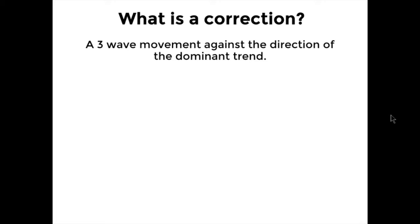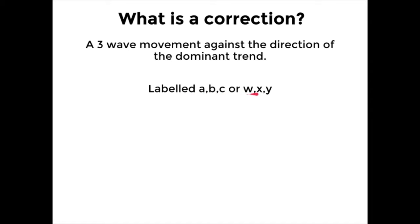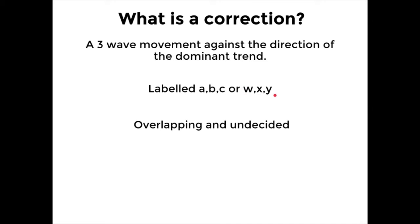In module one we figured out what the dominant trend is. Once you know that a trend move in five waves has completed, you know to expect a counter trend correction. Corrections are always labeled in either ABC or WXY. ABC is a simple correction; WXY is a combination or complex correction, where multiple simple corrections come together to form a larger corrective structure.